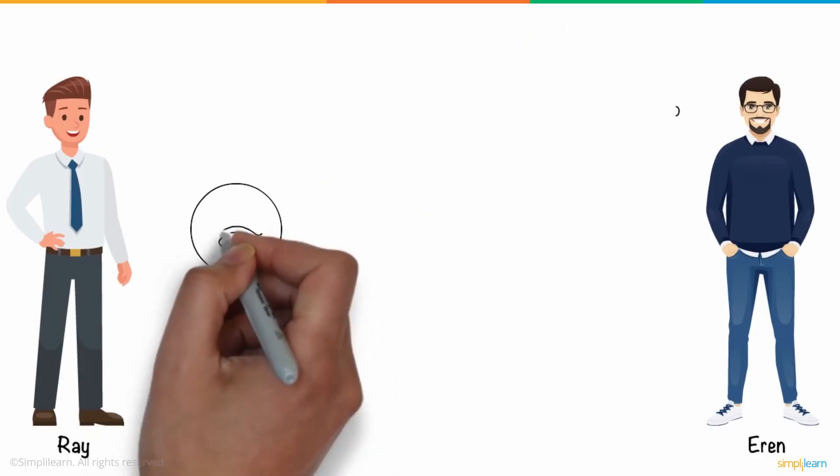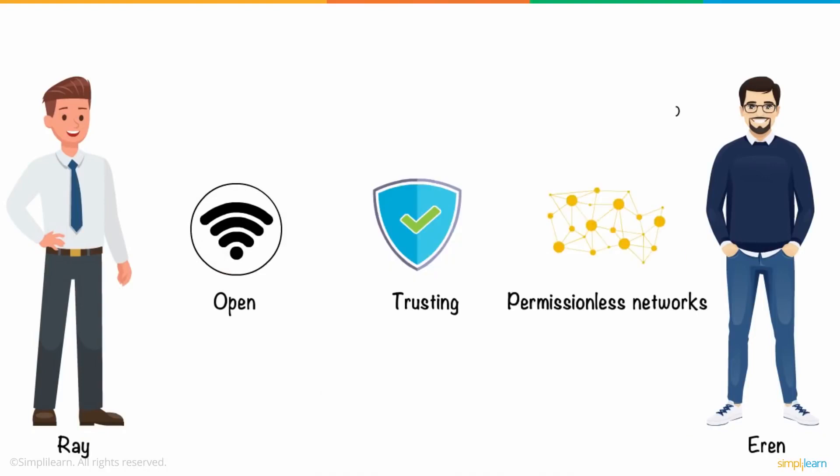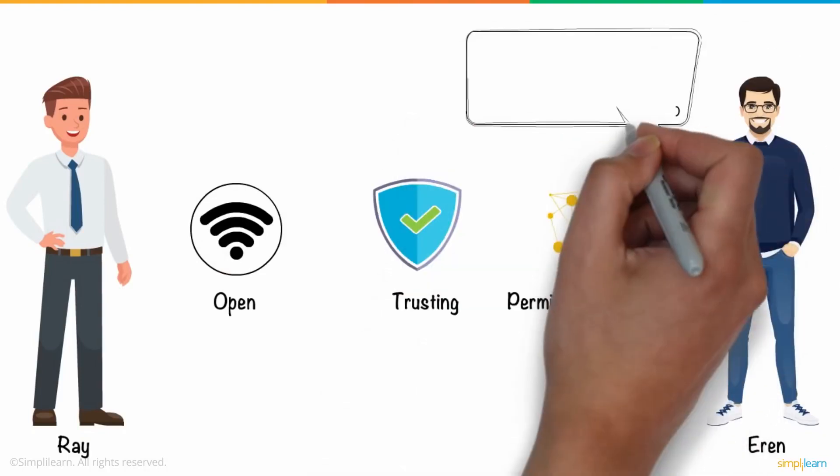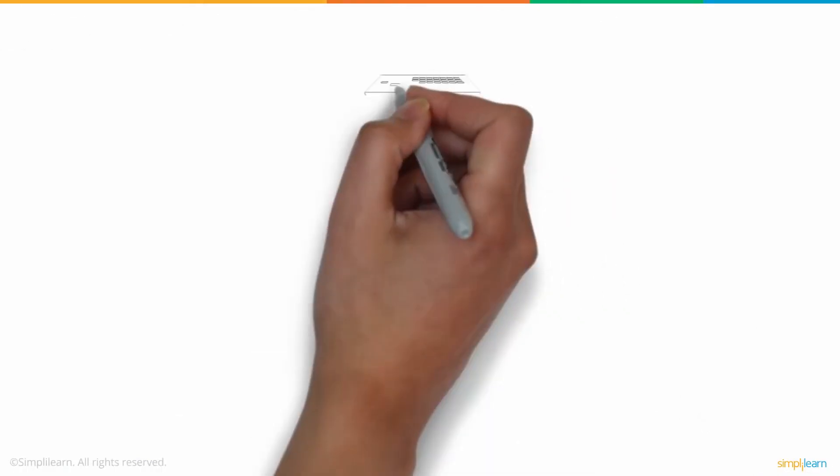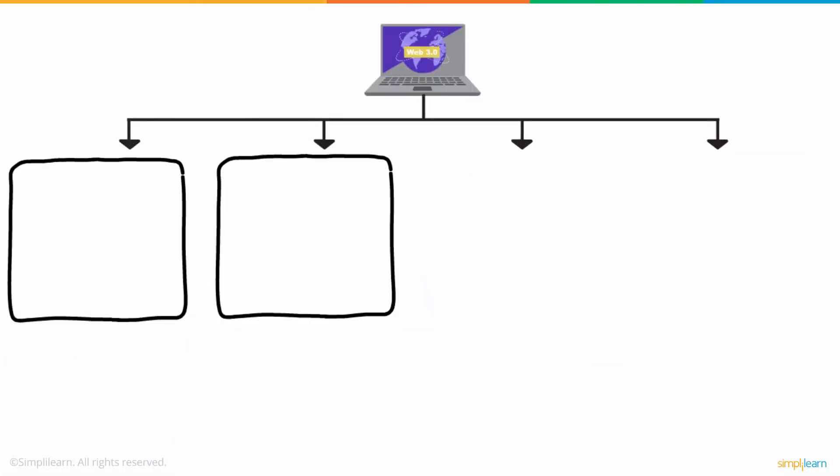It's a significant step toward open, trusting, and permissionless networks. Aaron further added, to fully comprehend this, we must first explore the four key features of Web 3.0.